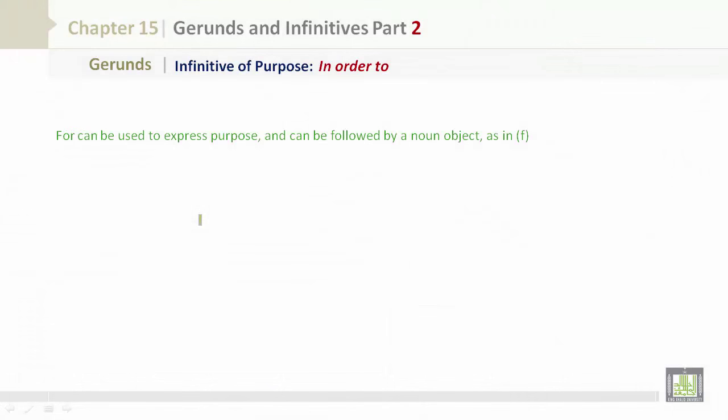For can be used to express purpose and can be followed by a noun object, as in Example F. For example, I went to the store for some rice. I went to the store to buy some rice.